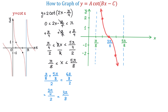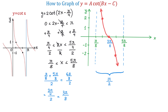Here we have the graph of the function y equals 2 cotangent of 2x minus pi over 4. The period of this function is pi over 2, which represents the distance between two vertical asymptotes. Taking 5 pi over 8 and subtracting pi over 8 gives 4 pi over 8, which equals pi over 2. From here, we can repeat this graph to the left and to the right as many times as needed. I hope you liked this video — please subscribe, leave comments, and thank you for watching.